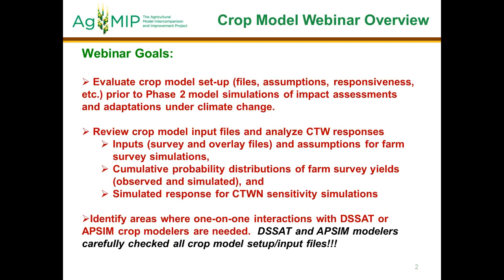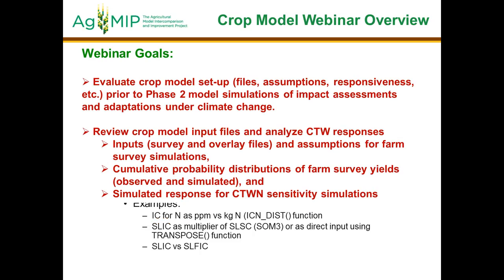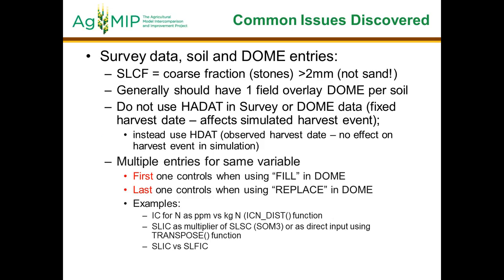We're going to review what you've done with the overlay and survey assumptions, discuss the probability of exceedance graphs from the farm survey yields, and show examples from the simulated response to temperature and nitrogen. We want to identify places where we need one-on-one interactions with either the DSAT or the EPSIM crop modelers. This is very important — those of you at the multi-model course two years ago in India and Nepal, we created side sessions to look at the files, and that was critical before going forward.